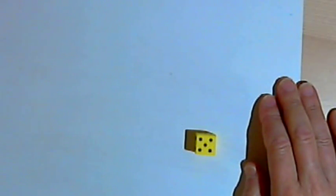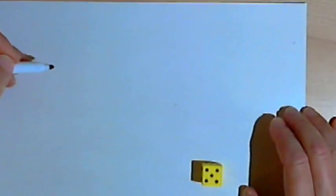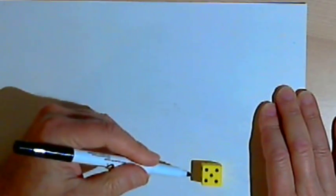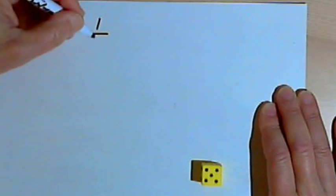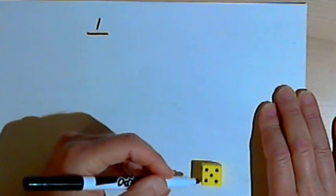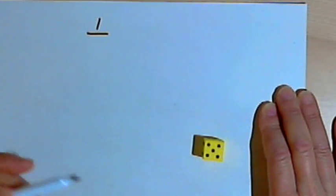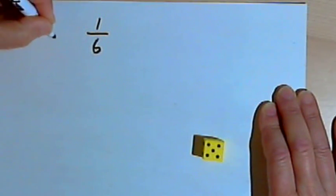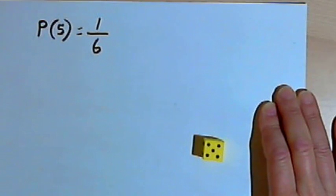When we talk about probability, we can express it as a fraction. The probability of getting a 5 is the number of ways we could get a 5 — that's the numerator — and there's only one way to roll a 5. That gets divided by the total number of things that could happen: 1, 2, 3, 4, 5, or 6 — six different outcomes. So the probability of getting a 5, written as P(5), is 1 over 6.